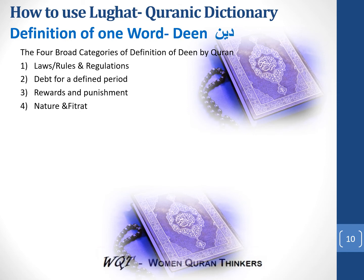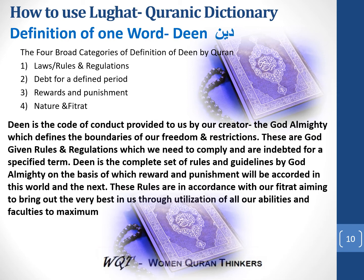Combining these four meanings, deen is a complete code of conduct pertaining to each and every aspect of our life. It is provided to us by our creator, God Almighty, and defines the boundaries of our freedom and our restrictions. These are God-given rules, regulations, set of instructions, and guidelines which we need to comply with and for which we are indebted for a specified period of time. Deen is the complete set of rules on the basis of which rewards and punishments will be accorded in this world and the next. These God-given rules are in accordance with our fitrat, with the basic aim to bring out the very best in us through utilization of all our abilities and faculties to the maximum.